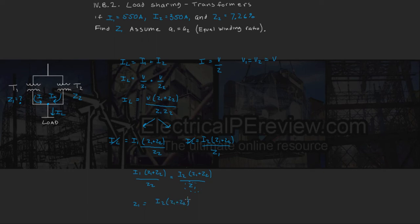Z1 equals I2 times Z2. Of course, these two terms here we can eliminate.